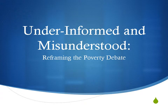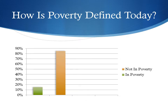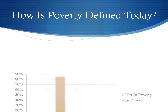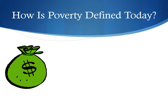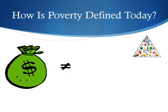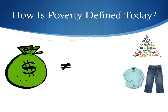Under-informed and misunderstood: reframing the poverty debate. According to the government, 15% of the American population lives in poverty. But what does that mean? As far as the government and most Americans are concerned, poverty means making below a certain amount of money each year. But is this definition enough to encompass the totality of what poverty is?